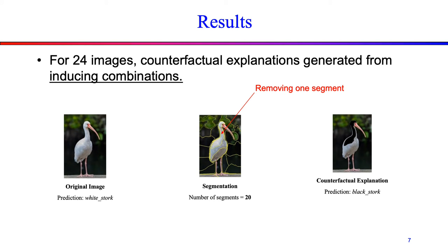I will now discuss the results and observations from our experiments. First, I discuss the results of counterfactual explanations generated from an inducing combination alone. For 24 images, the modified images generated based on their respective inducing combinations identified by Ben effectively changed the original prediction. In other words, for these 24 images, we are able to generate counterfactual explanations merely based on their respective inducing combinations identified by Ben. Out of which, for six images, our approach suggests removing one segment to produce a counterfactual explanation.